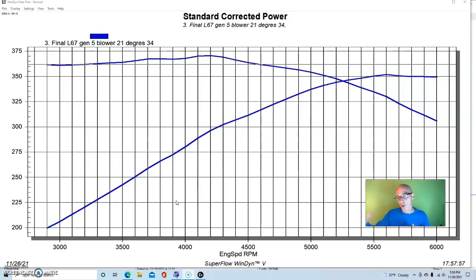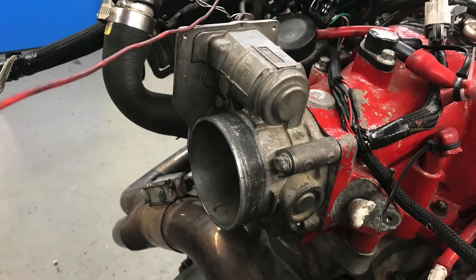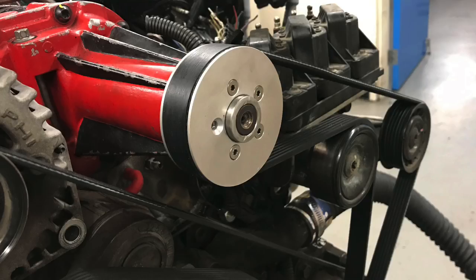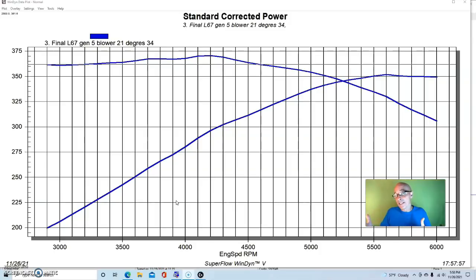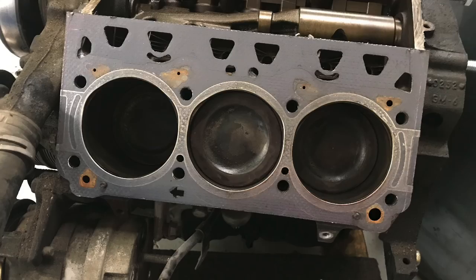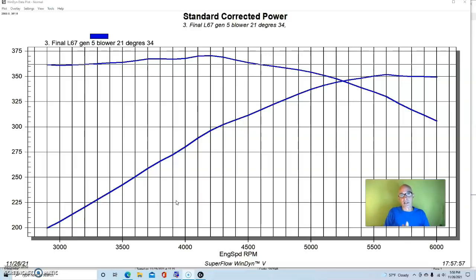They both have the same intake manifold. They both have the same blower because we ran the same blower, which was a Gen 5 supercharger with the throttle body and the 3.2-inch pulley. So, they basically had the same top ends. The only thing that was different on both of these motors was basically the bottom end. The camshaft, I'm assuming that the L32 and the L67 camshaft are the same. I think that they are.